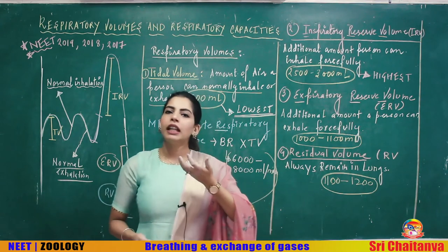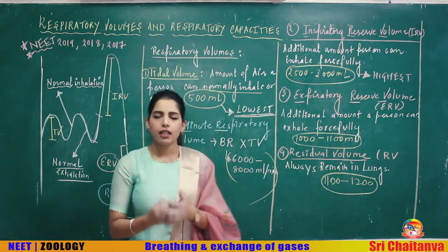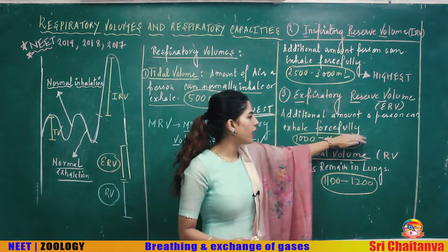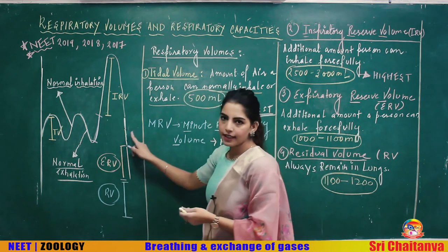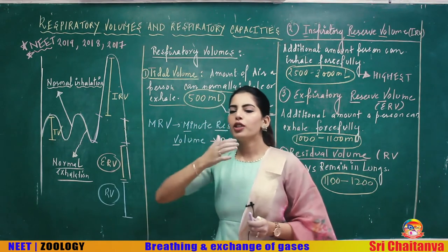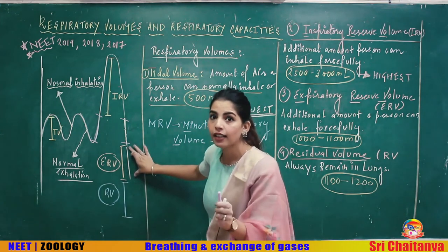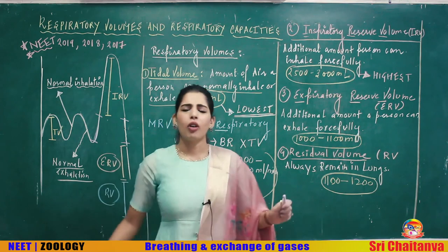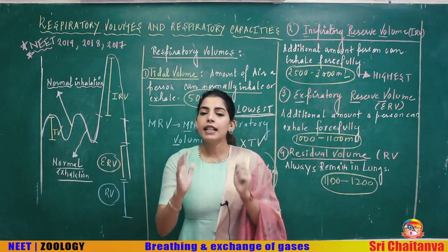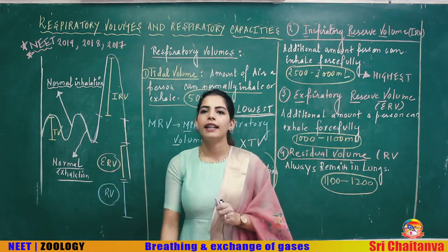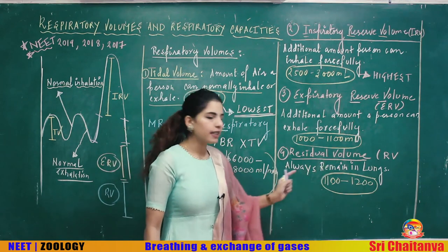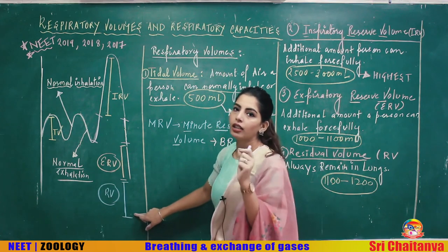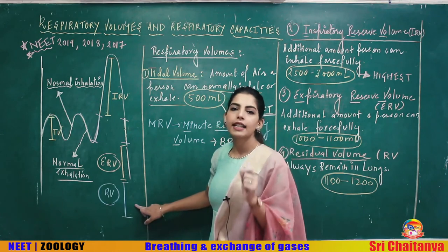The Expiratory Reserve Volume (ERV) is the additional amount of air a person can forcefully exhale after a normal exhalation. On the graph, this is the extra volume below normal exhalation that can be forcefully expelled. Its value is 1200 ml. Even after forceful exhalation, some air still remains in the lungs — that is the Residual Volume (RV), with a value of 1100–1200 ml, which never comes out.